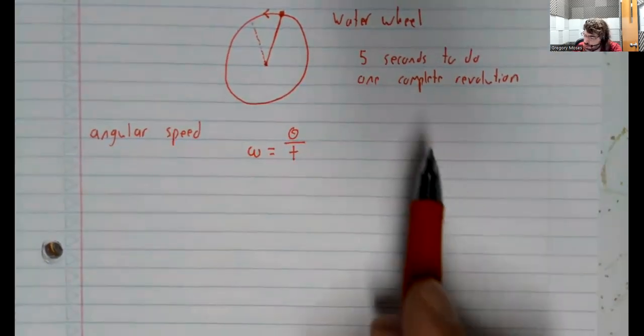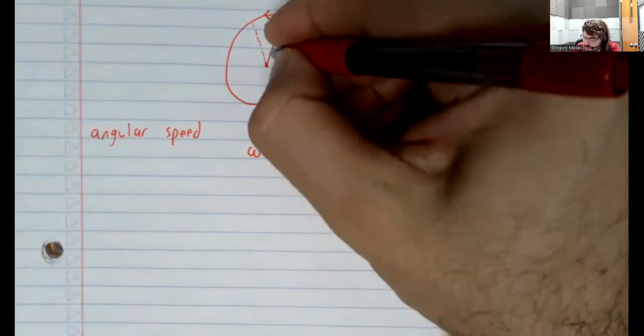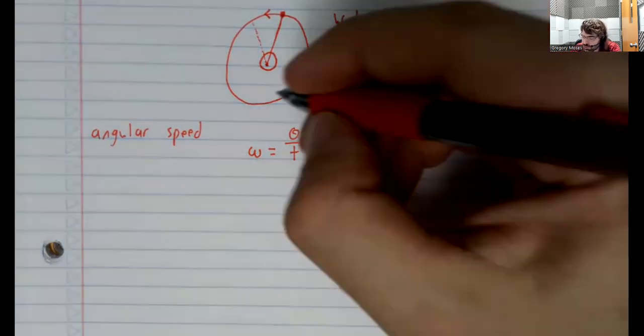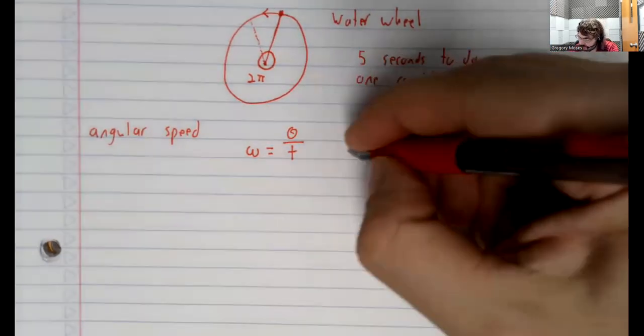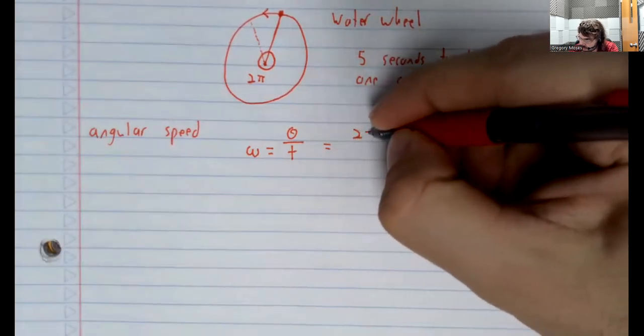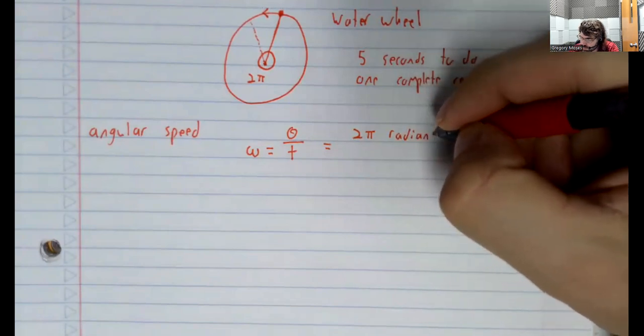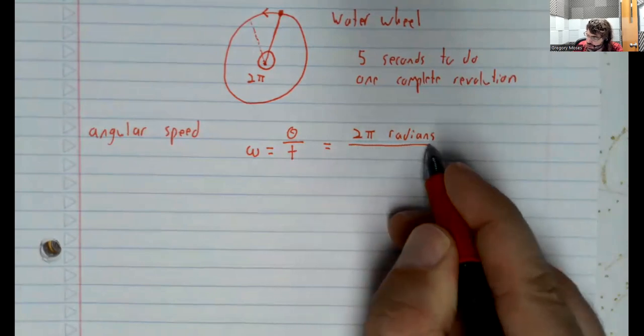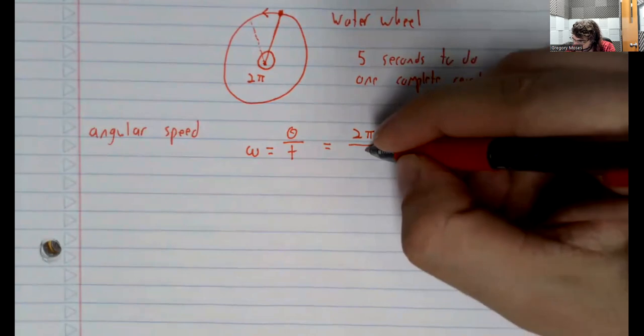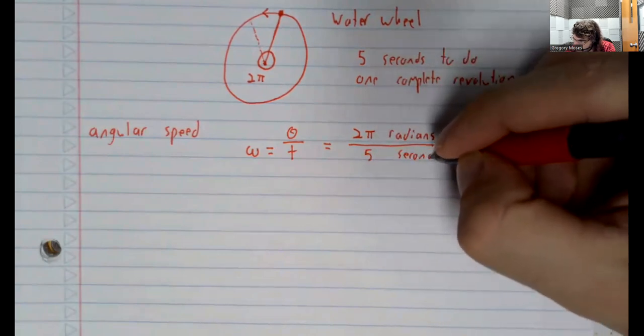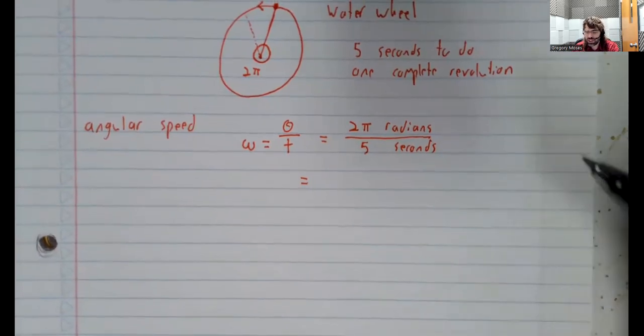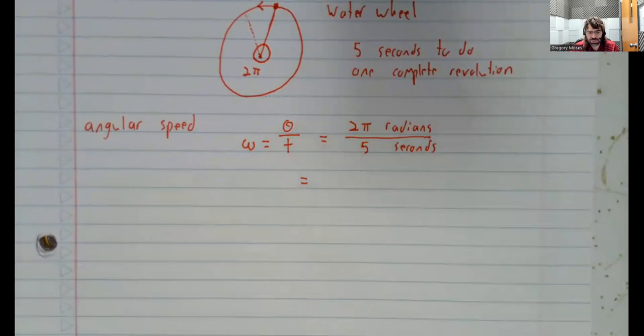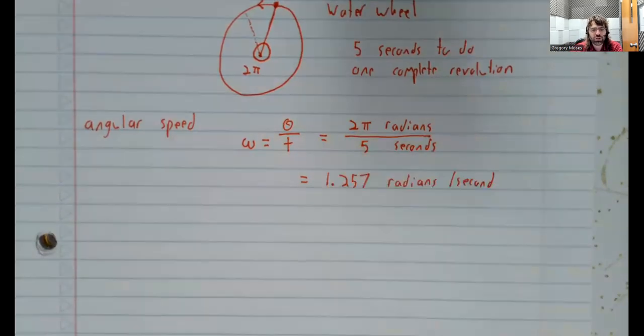Well, that's not what we have. What we have is that it takes five seconds to do one complete revolution, 360 degrees or two pi radians. T is the time it takes. It takes five seconds. So, pausing very slightly to divide two pi by five. The angular speed is 1.257 radians per second.